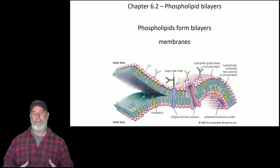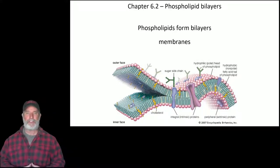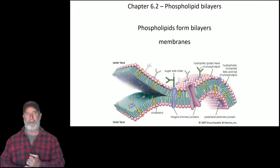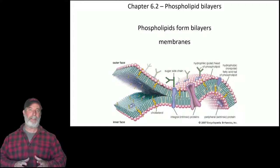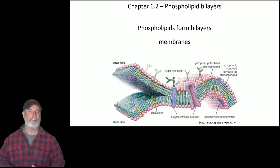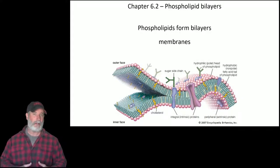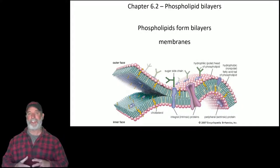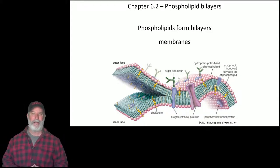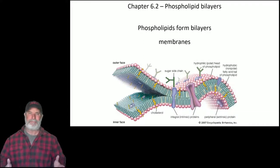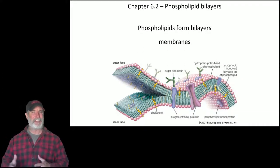Phospholipids form the membrane. When we talk about cell membranes, we use terms like plasma membrane, phospholipid bilayer, and cellular membranes — these all mean the same thing. In eukaryotic cells, organelles are membrane-bound structures inside our cells, and they are also surrounded by phospholipid bilayers.